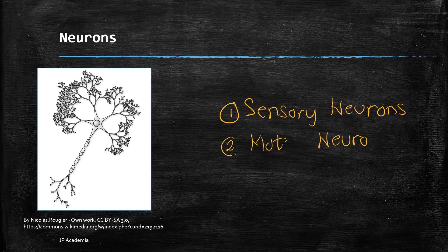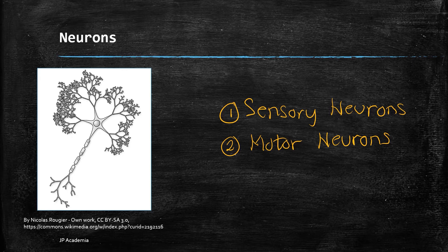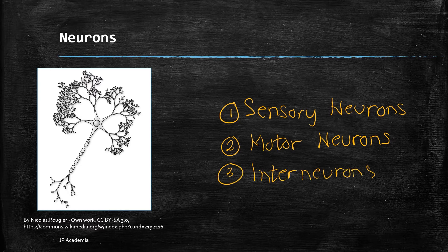Second, we have the motor neurons that manage signals that control the muscle cells. This signal is provided by the sensory neurons and the central nervous system located in the brain. Third, we have the interneurons that mainly transmit signals from one neuron to another.